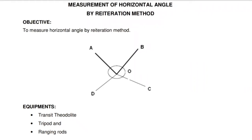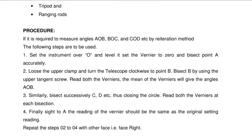Today we will learn measurement of horizontal angle by reiteration method. Objective: to measure horizontal angle by reiteration method. Equipment required: transit theodolite, tripod, and ranging rod. The procedure is used when it is required to measure angles AOB, BOC, and COD, etc.